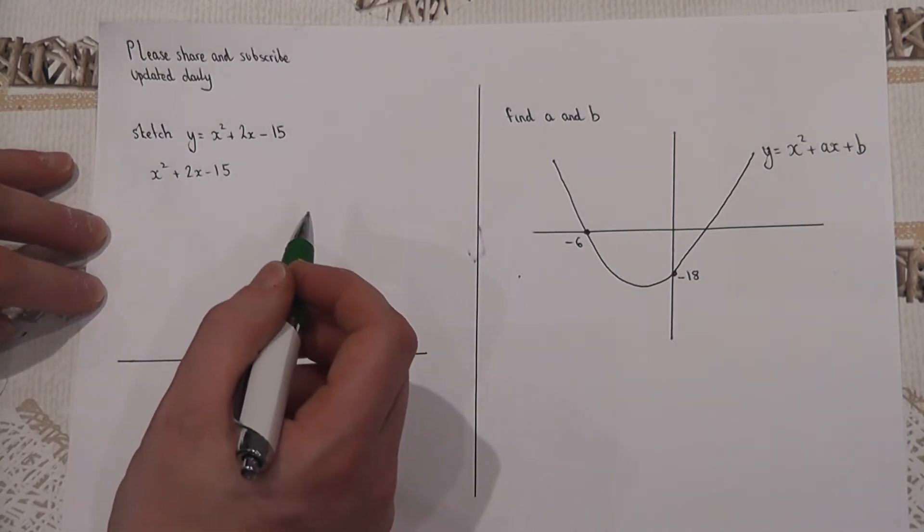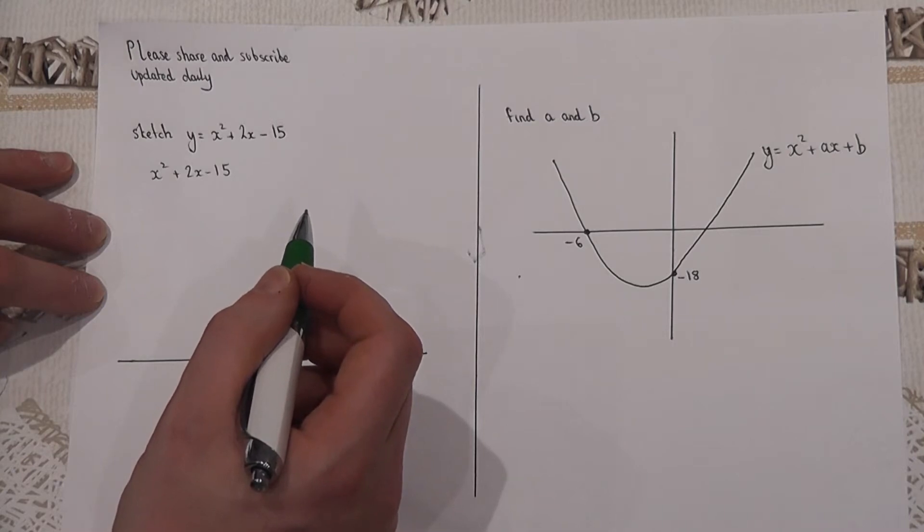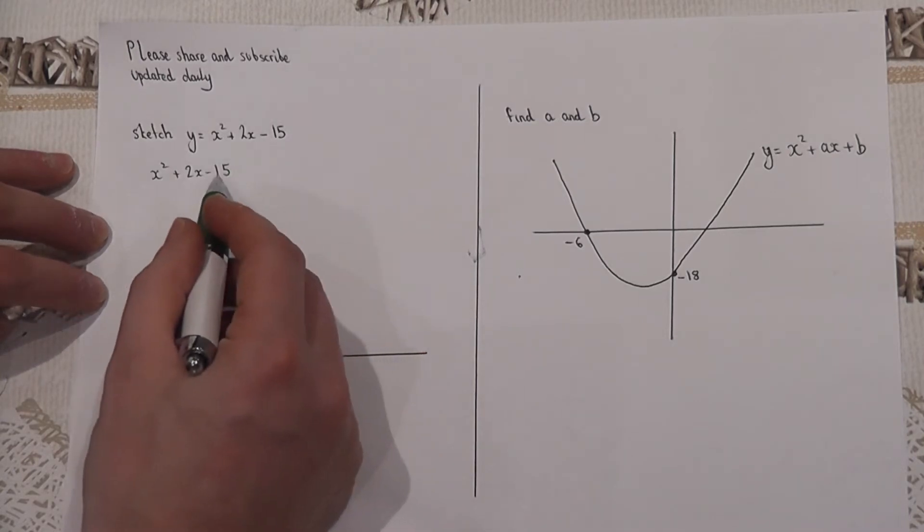Now the factors of 15 are 1 and 15, and 3 and 5. And 3 and 5 have got a difference of 2.